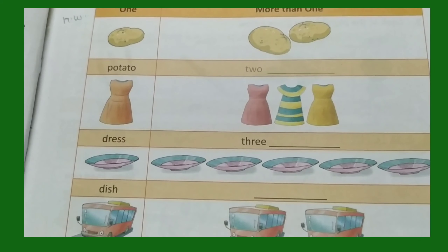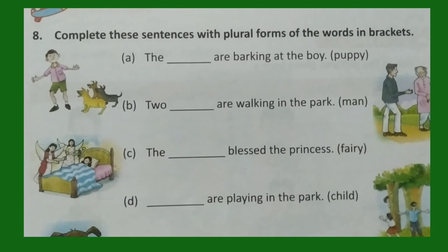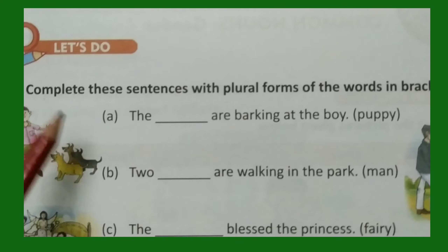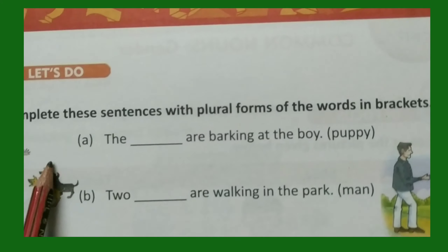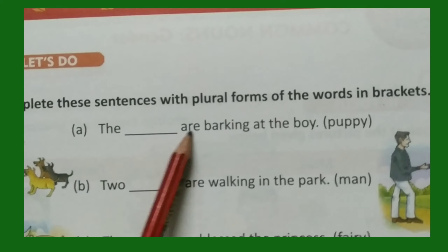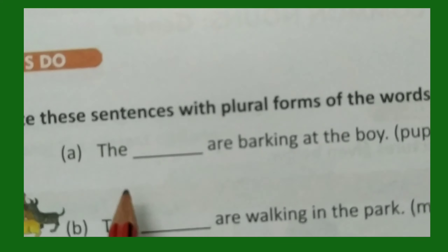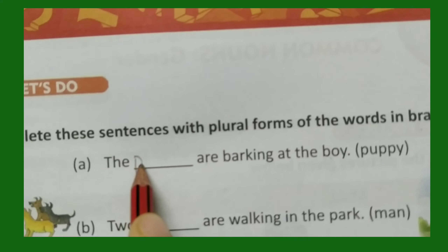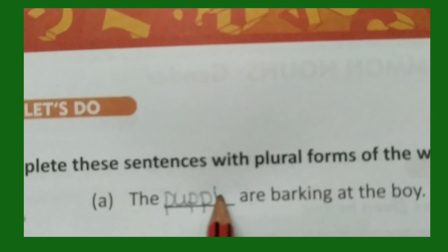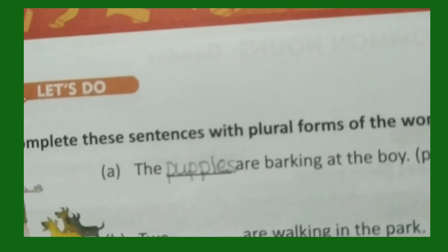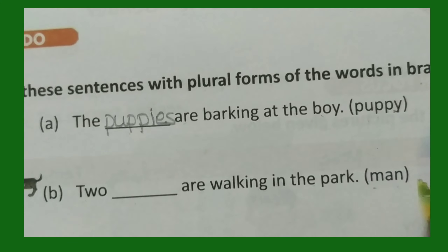Page 11, number 8: complete these sentences with the plural forms of the words in brackets. For a, the dash are barking at the boy — the word is puppy. What is the plural of puppy? We remove y and write p-u-p-p-i-e-s: puppies.